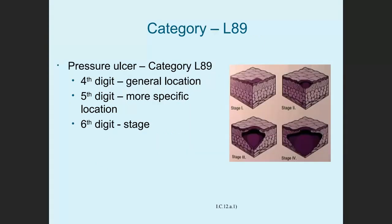Let's look at the makeup of category L89. The codes include a fourth digit for the general location, such as pressure ulcer of back, L89.1. Then the fifth digit gets more specific, such as pressure ulcer of the upper back, L89.11. The sixth digit may be more specific and also indicates the stage of the ulcer, such as pressure ulcer of right upper back stage two, which is L89.112. So each digit is adding more information.